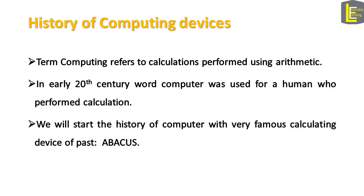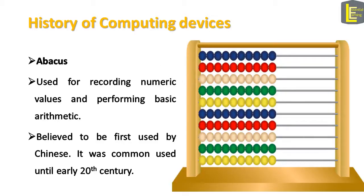To understand computer science, it is necessary to learn about the history of computers. In simple terms, computing refers to calculations performed using arithmetic. We will start the history of computers with a very famous calculating device of the past: the Abacus. The Abacus is used for recording numeric values and performing basic arithmetic. It was believed to be first used by the Chinese, but it was common until the early 20th century. The Abacus had beads in rows, and each row represented a specific value of a digit.